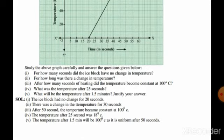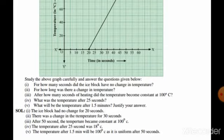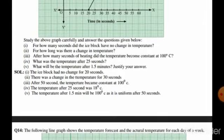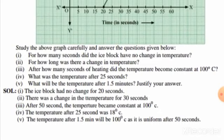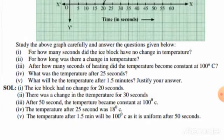In part two, for how long was there a change in temperature? There was a change in temperature for 30 seconds. In part three, after how many seconds of heating did the temperature become constant at 100 degrees Celsius? After 50 seconds the temperature became constant at 100 degrees Celsius. In part four, the temperature after 25 seconds was 18 degrees. In part five, after 1.5 minutes the temperature was 100 degrees Celsius, as seen from the graph.